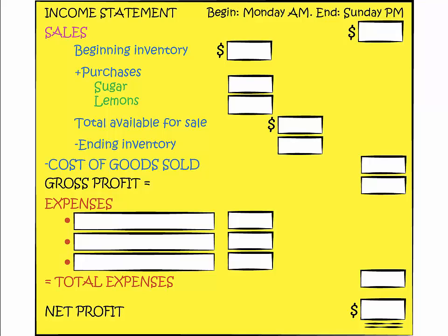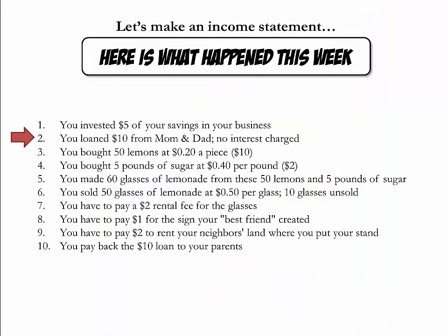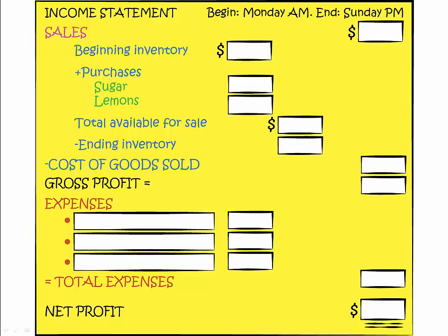The $5 investment also belongs on the cash flow statement because it involved cash — we will discuss the cash flow statement later on. The next thing that happened last week was that you loaned $10 from mom and dad, and they did not charge interest. Similar to the $5 original investment, the $10 loan also does not belong on the income statement because it did not affect our earnings.